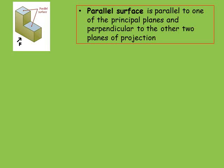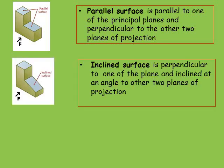The first one is parallel surface. A parallel surface has its surface parallel to one of the principal planes of projection and perpendicular to the other two. The principal planes of projection are the horizontal plane, vertical plane, and profile plane. In the example shown, the direction of the arrow shows the front side of the object. The object will have true shape and size on the plane to which it is parallel. In this example, the true shape and size of the surface will be shown in the top view.